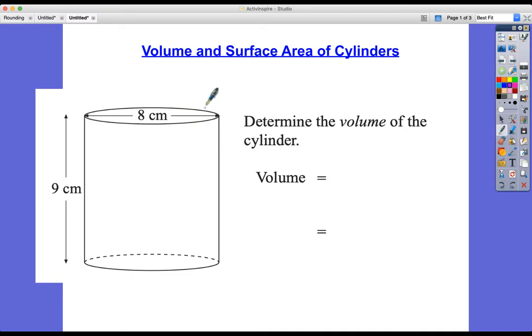which means that the top and bottom of this shape are equal in area. They are congruent shapes, so exactly the same, and in this case it's a circle with a diameter of 8 centimeters. The height of this cylinder, as we can see in the diagram, is 9 centimeters.